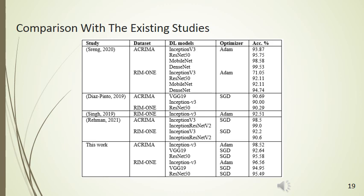Moving on to the comparison with existing studies: the highest accuracy of 99.53% is shown by Sring and others using the DenseNet model. They suggested a glaucoma screening method using two stages — in the first stage, optic disc segmentation was performed using DeepLab V3 Plus architecture; in the second stage, a pre-trained deep neural network was employed for image classification. The fundus image-based automatic glaucoma assessment method was proposed by Dias Pinto and others, showing considerable results on ACRIMA and RIM1 datasets.